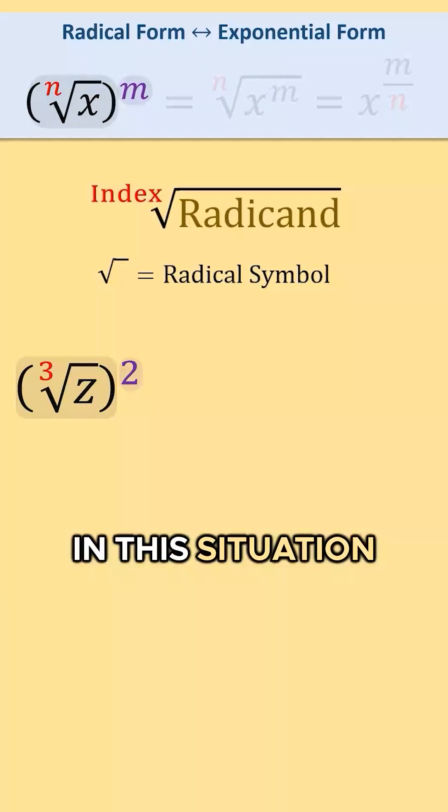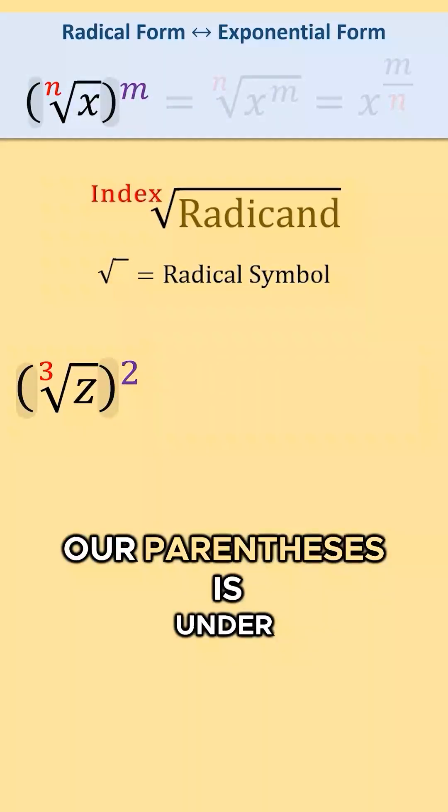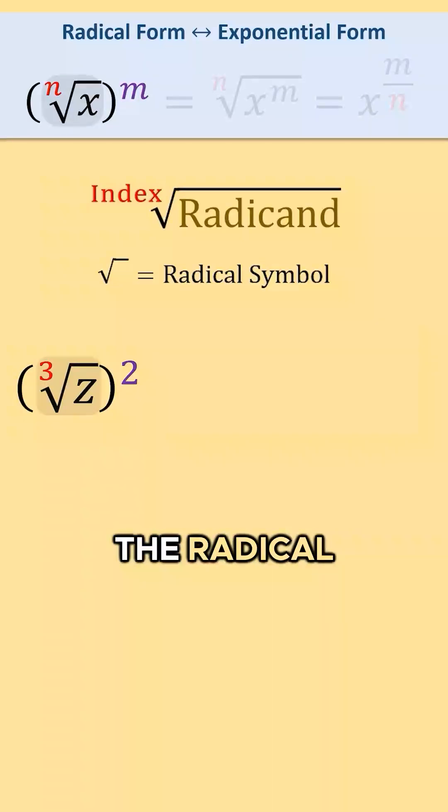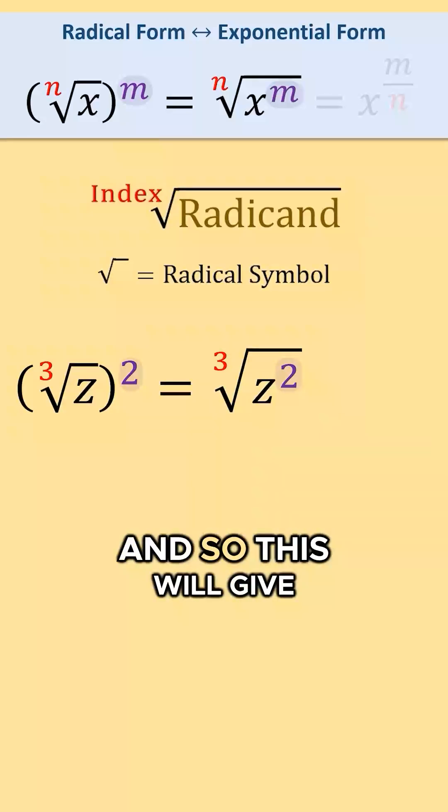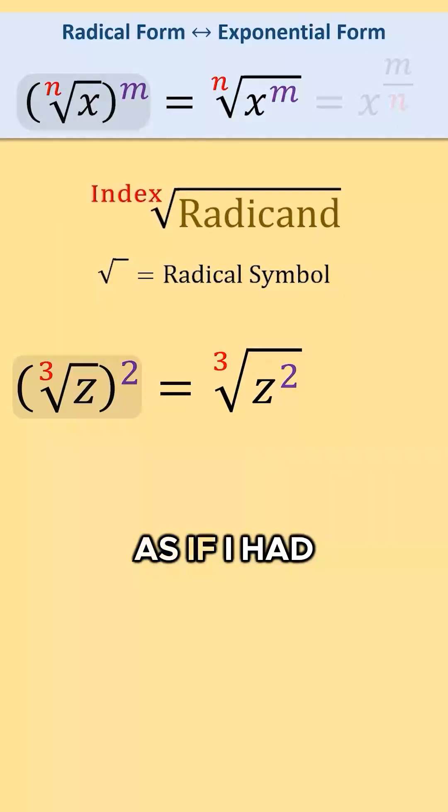In this situation, as long as everything within our parentheses is under the radical, we can treat this outside power as if it was the power of everything inside the radicand. So this will give us the same result as if I had the cubed root of z squared.